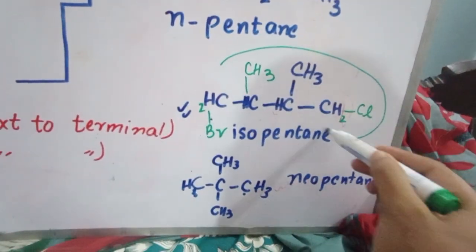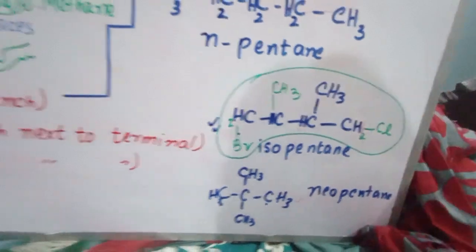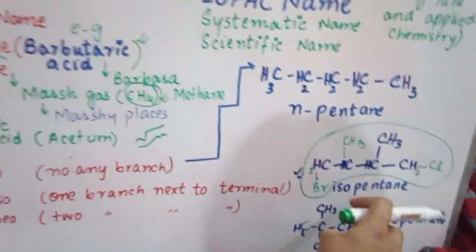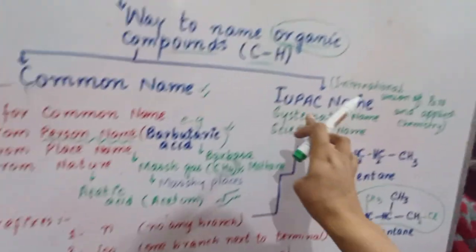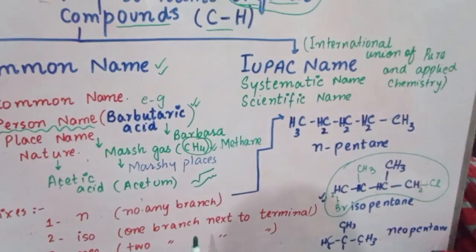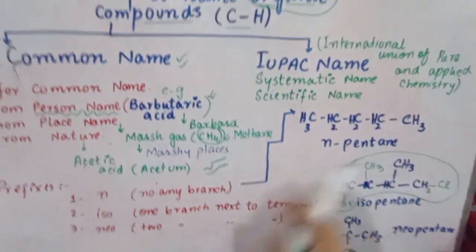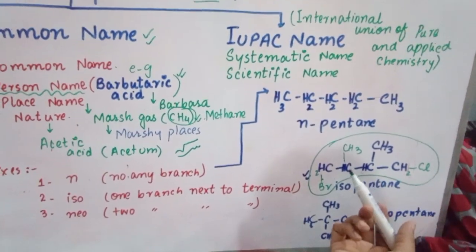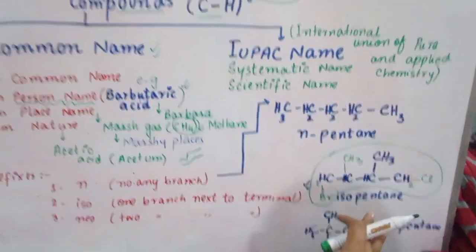This structure will never be named with common name. We will not give it a common name. We will use the rules for IUPAC. This is a structure which is complicated and has more branches, that is why we need to use the IUPAC name.